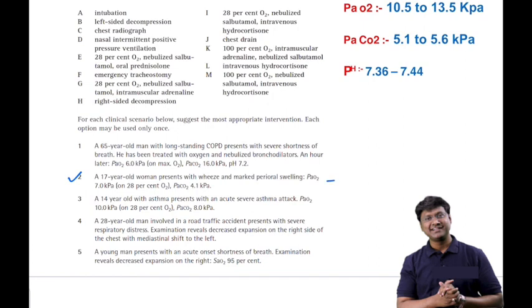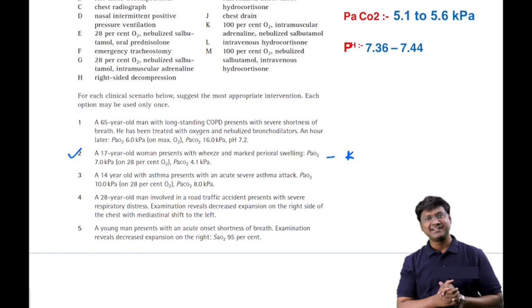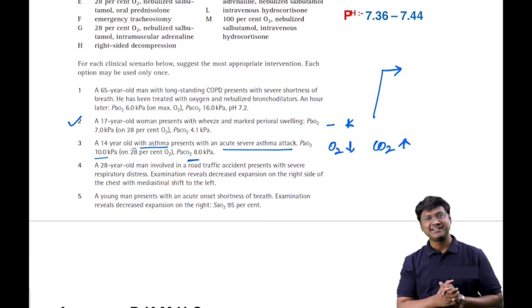The treatment for the second scenario is 100% oxygen, intramuscular adrenaline, and nebulized salbutamol. Third clinical scenario: a 14-year-old with asthma presents with acute severe asthma attack. PaO2 is 10 kilopascals (reduced; normal 10.5), and PaCO2 is 8 kilopascals (elevated; normal 5.1–5.6). This individual is in type 2 respiratory failure — hypoxia and hypercapnia.